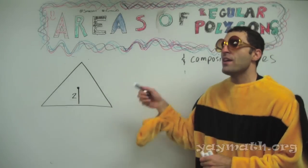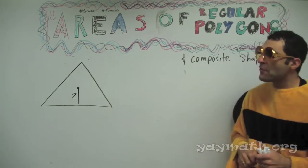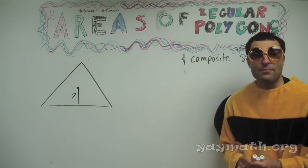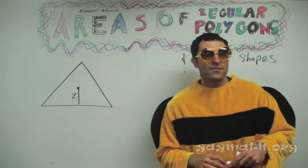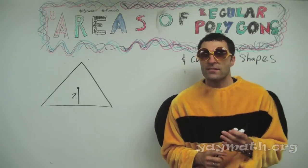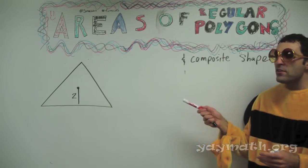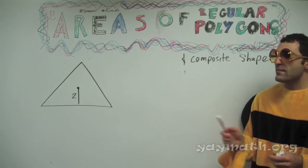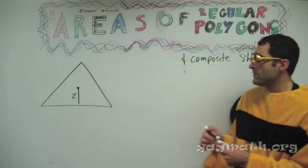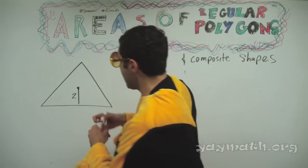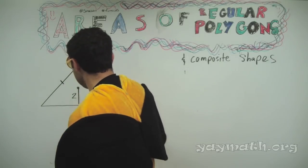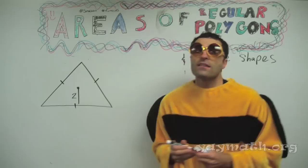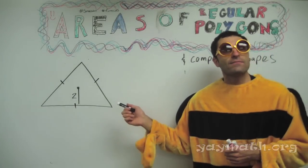The last shape we're going to do is an equilateral triangle. Notice that the sides are not given. I'm going to say that it is equilateral, so we can mark that. The sides aren't given, but what is given?